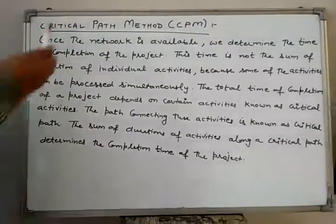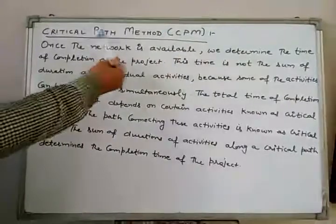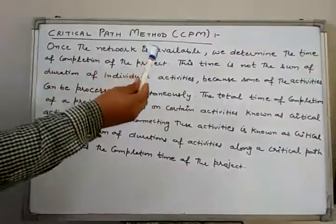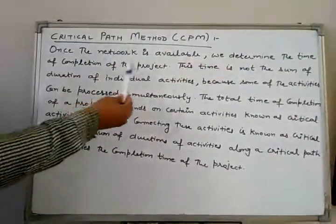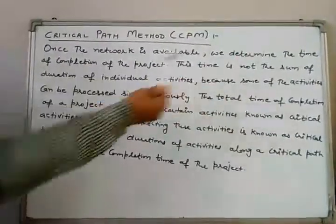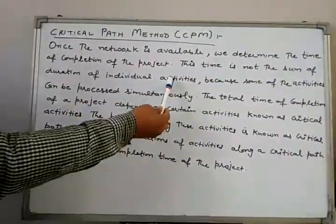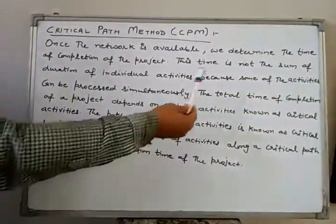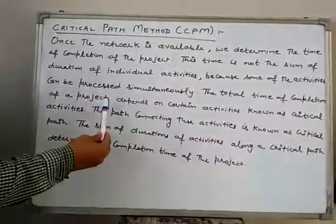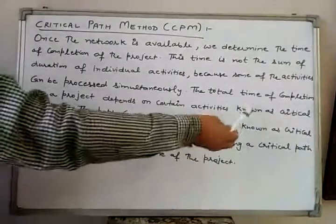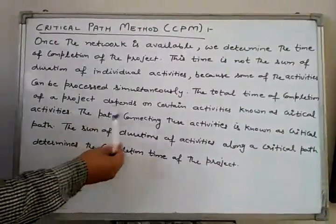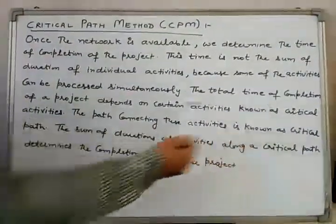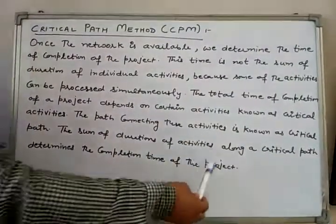I am going to discuss the Critical Path Method, denoted by CPM. Once the network is in our hand, we determine the time of completion of the project. This time is not the sum of the duration of individual activities, because some activities can be processed simultaneously. Thus, the total time of completion depends on certain activities known as critical activities. The path connecting these activities is known as the critical path, and the sum of durations along a critical path determines the project completion time.